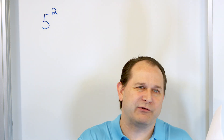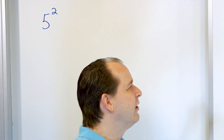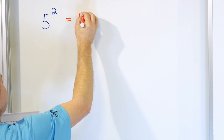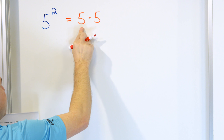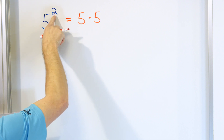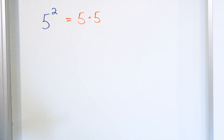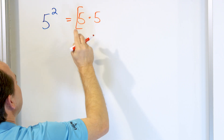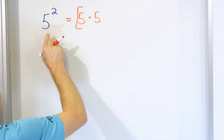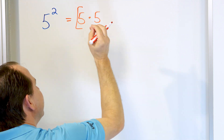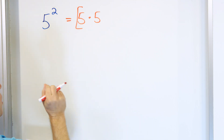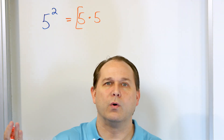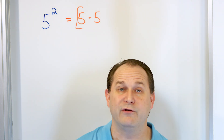Don't let the idea of product of factors scare you. Product means multiplication, and factors means things — that's probably the easiest way to think of it. So when I ask you to write it as a product of factors, I'm asking you to write this as the multiplication of things. So this exponent means that you take the base, which is the number five, and multiply it times itself. The number of fives you have is equal to the exponent number. So five to the power of two, written as a product of factors, is five times five. Squared is the power of two.